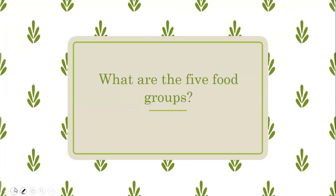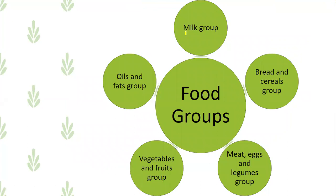What are the five food groups? شو هنن مجموعات الطعام الخمسة؟ الطعام اللي نحن نتناوله بينقسم إلى خمسة مجموعات. The first group is the milk group - المجموعة اللي تحتوي على الحليب ومشتقاته. The second group is bread and cereals - الخبز والحبوب. The third group is meat, eggs, and legumes - اللحوم والبيض والبقوليات. The fourth group is vegetables and fruits. The fifth and last group is oils and fats - الزيوت والدهون والسكريات.